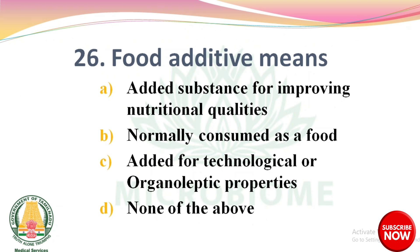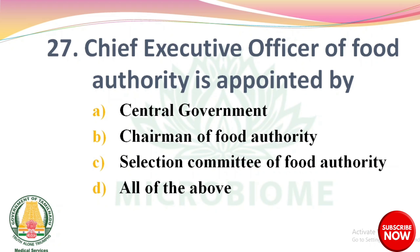Question 25: A food additive is a substance added for improving nutritional qualities, normally consumed as a food, added for technological or organoleptic properties, none of the above. The right answer: option C, added for technological or organoleptic properties. Question 26: Chief Executive Officer of the Food Authority is appointed by — options: Central Government, Chairman of Food Authority, Selection Committee of Food Authority, all of the above. The right answer: option A, Central Government.